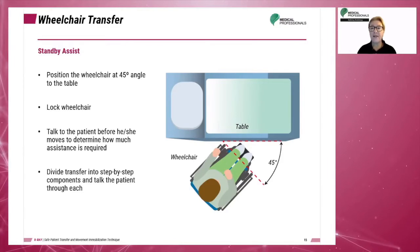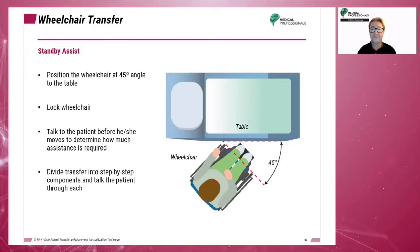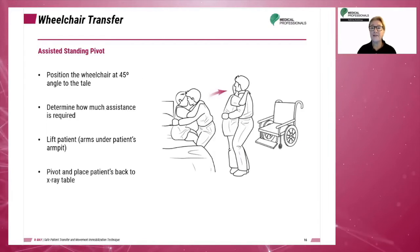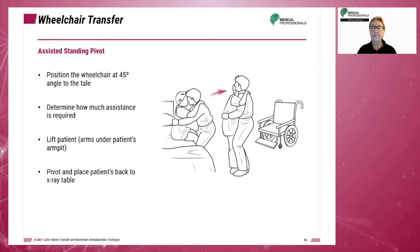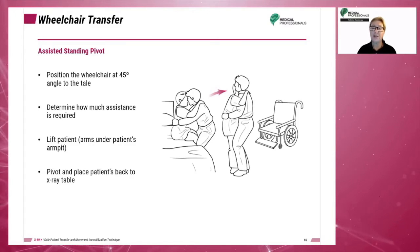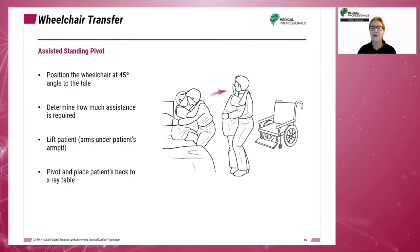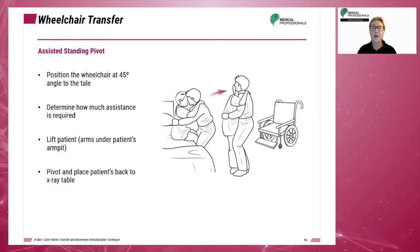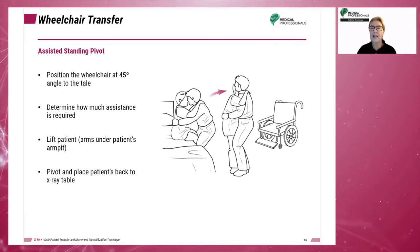Use step-by-step instructions to communicate clear tasks to the patient. The assisted standing pivot technique is used when the patient needs more help and possible help through lifting. Again, the wheelchair should be positioned at a 45-degree angle to the table. Lock the wheelchair and determine how much assistance the patient will need. Lift the patient by placing your arms under the patient's armpit. Pivot without twisting your trunk and place the patient's back to the x-ray table.